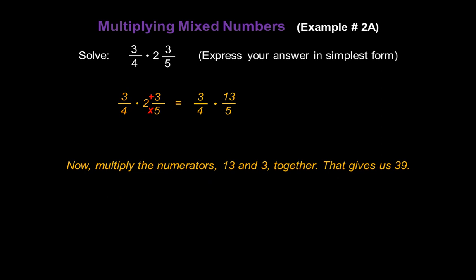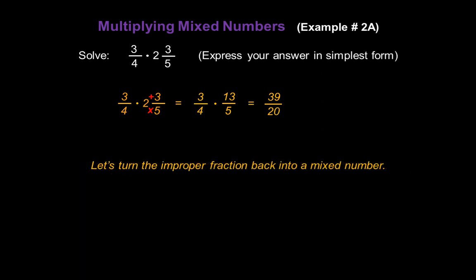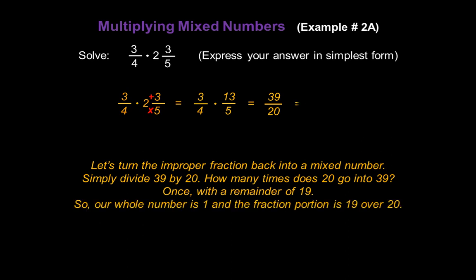So let's multiply the numerators 13 and 3, which gives us 39. Then multiply the denominators 4 and 5, which gives us 20. We won't leave the answer as an improper fraction — we'll convert it back to a mixed number by dividing 39 by 20. 20 goes into 39 once with a remainder of 19, so our whole number is 1 and the fraction portion is 19/20. Our answer is 1 and 19/20.